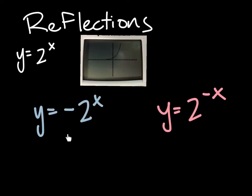Now, both of these graphs are going to be reflected in one way. Either the negative is out in front of everything, or the negative is attached to the x.